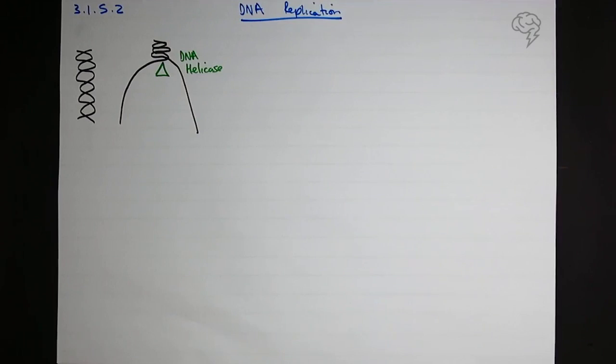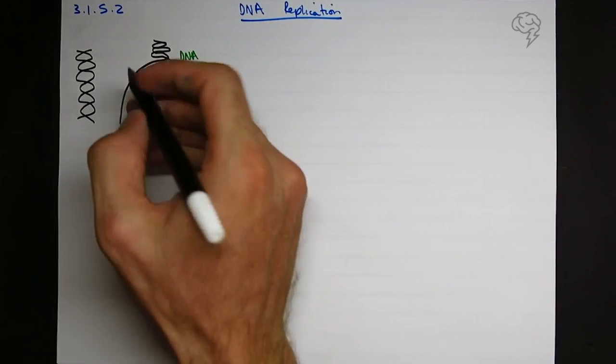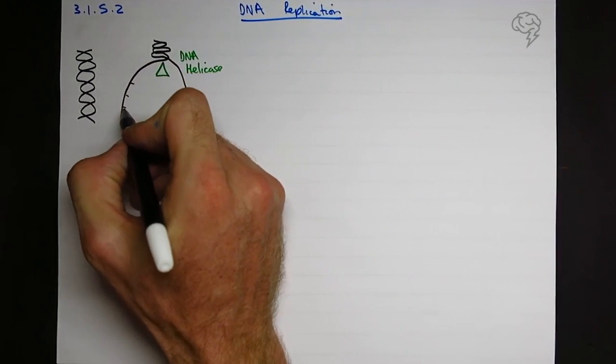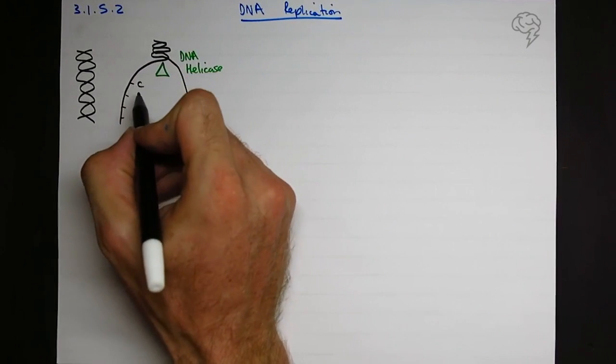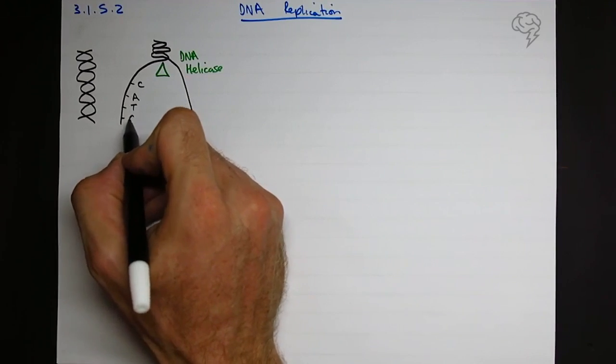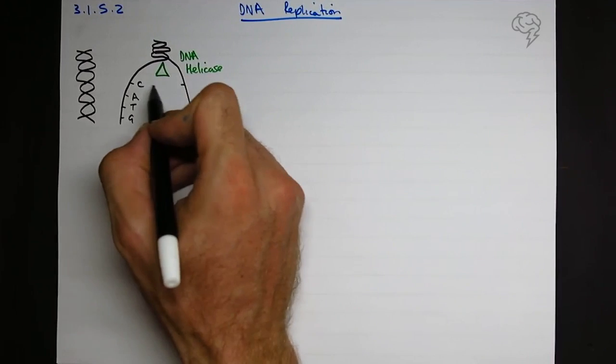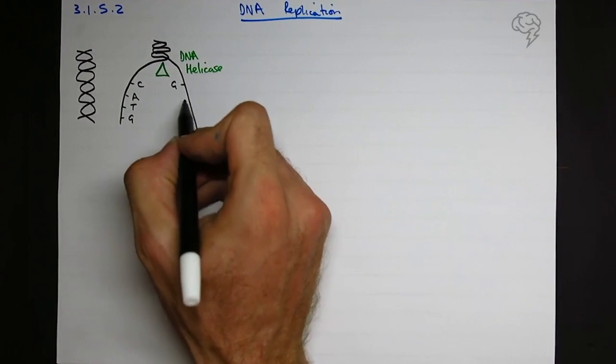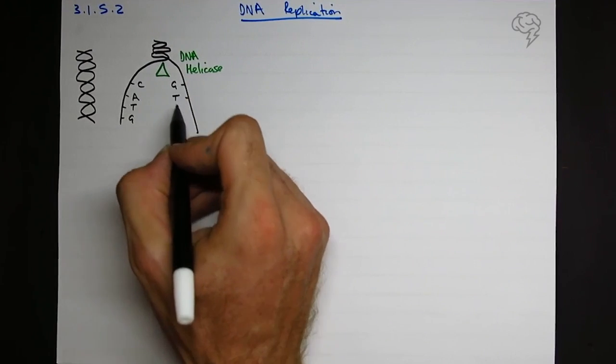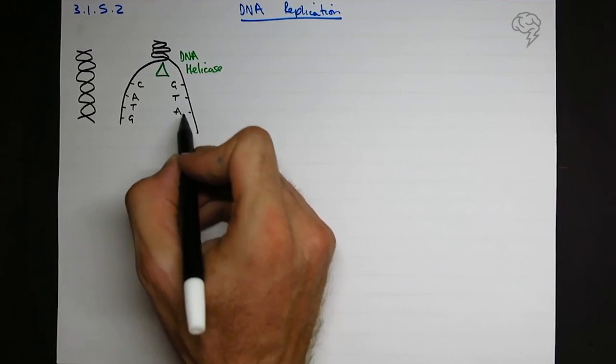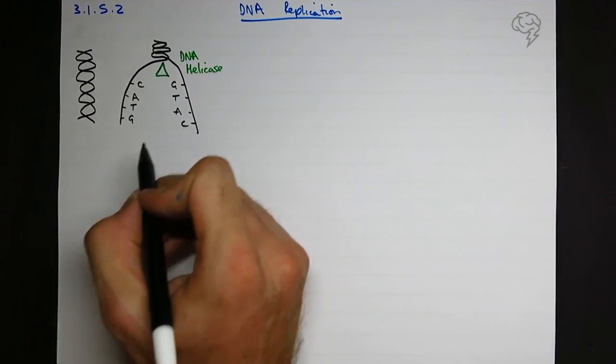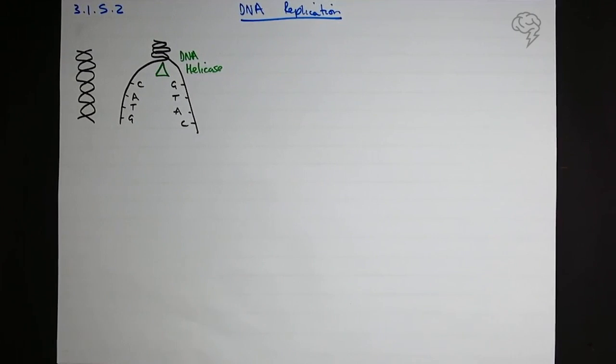So DNA helicase, what does that do? Well, in fact, let me finish drawing. I'll draw four bases on here. Let's go C, A. See if you can remember what they are. T and G. So this was our corresponding opposite pair. C always bonds with G, A always with T, T always with A, and G always with C. These were partners on each opposite sides.